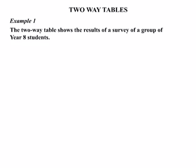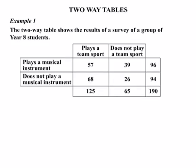In this lesson we'll be looking at two-way tables. The two-way table shows the results of a survey of a group of Year 8 students. The table looks at whether students play a musical instrument or not, and whether they play a team sport or not.